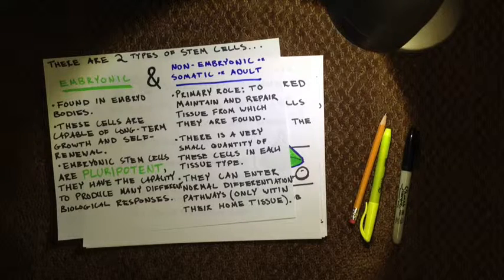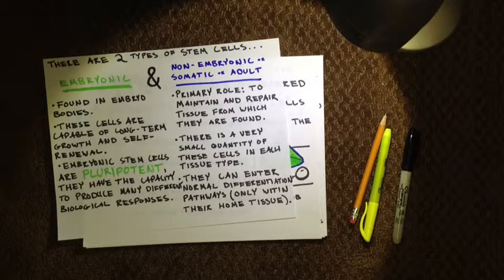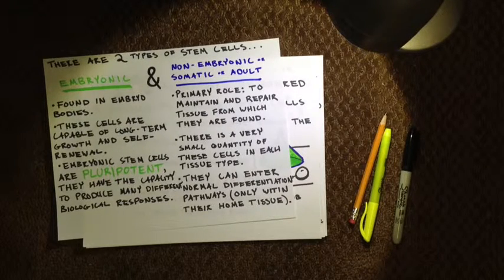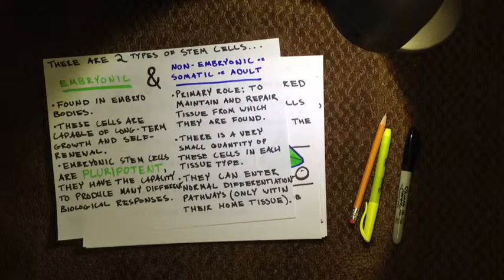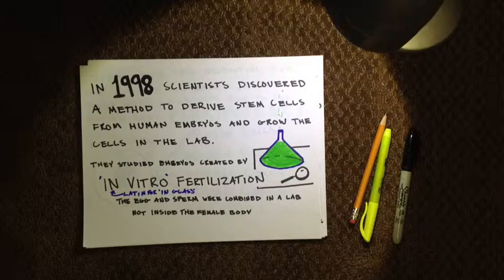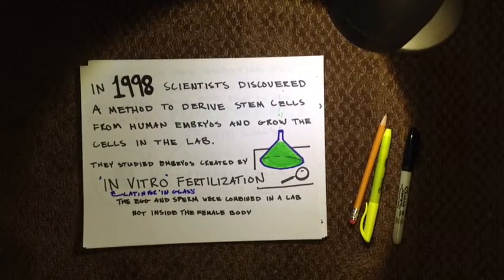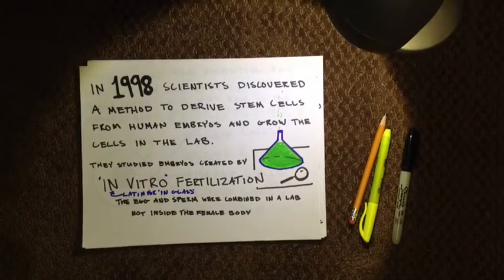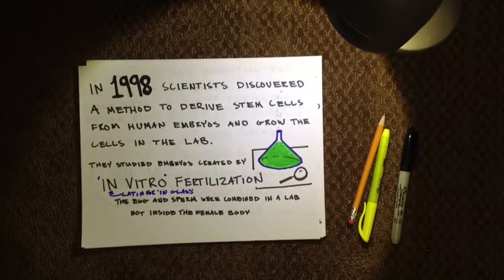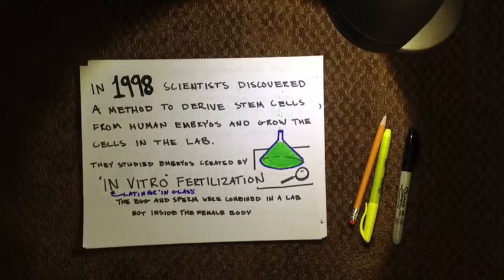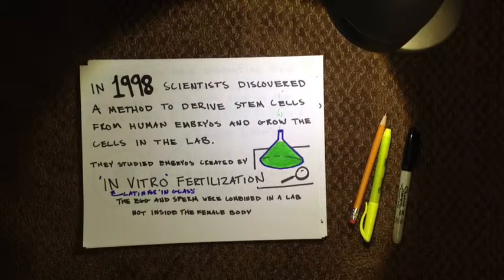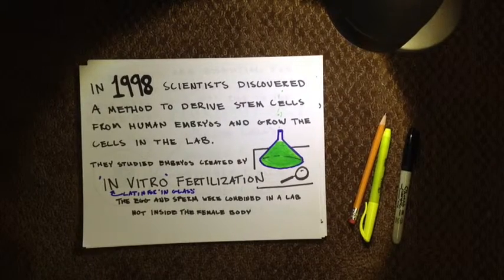A number of experiments have reported that certain adult stem cell types can differentiate into cell types seen in organs or tissues other than those expected from the cell's predicted lineage. These cells were reprogrammed. In 1998, scientists discovered a method to derive stem cells from human embryos and grow the cells in a lab. They studied embryos created by in vitro fertilization, in Latin meaning 'in glass.'